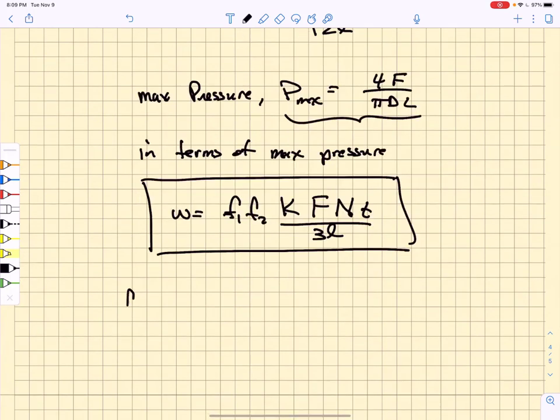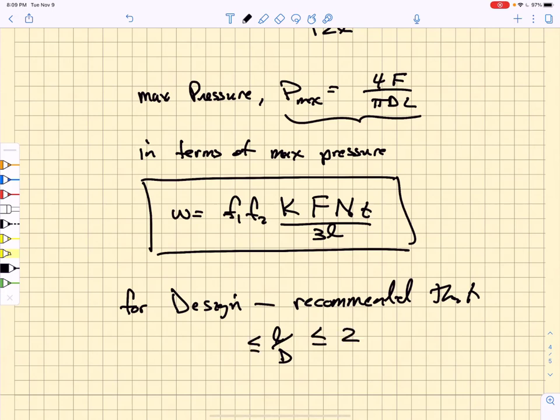So it turns out for design, it is recommended that your L over D ratio—so your sleeve length divided by your shaft diameter—is somewhere in the range of one-half to two.